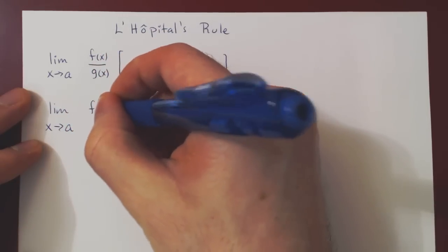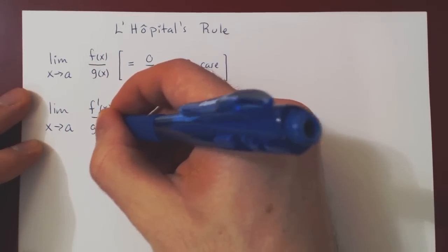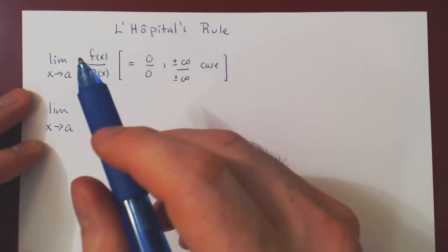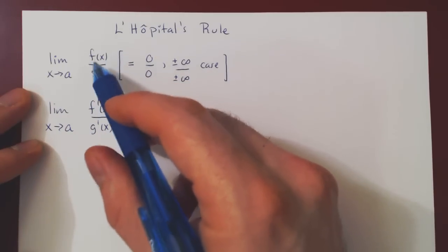So f is replaced by f prime, and g is replaced by g prime. And be careful, we do not differentiate the quotient using the quotient rule. We simply replace the numerator and the denominator by their corresponding derivatives.